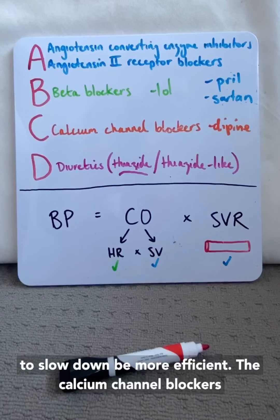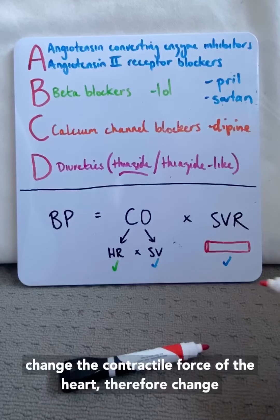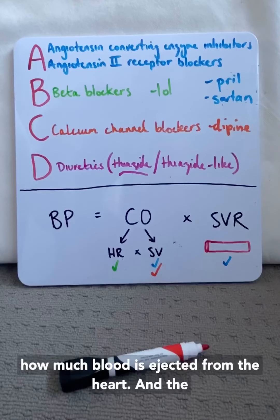The calcium channel blockers change the contractile force of the heart and therefore change how much blood's ejected from the heart.